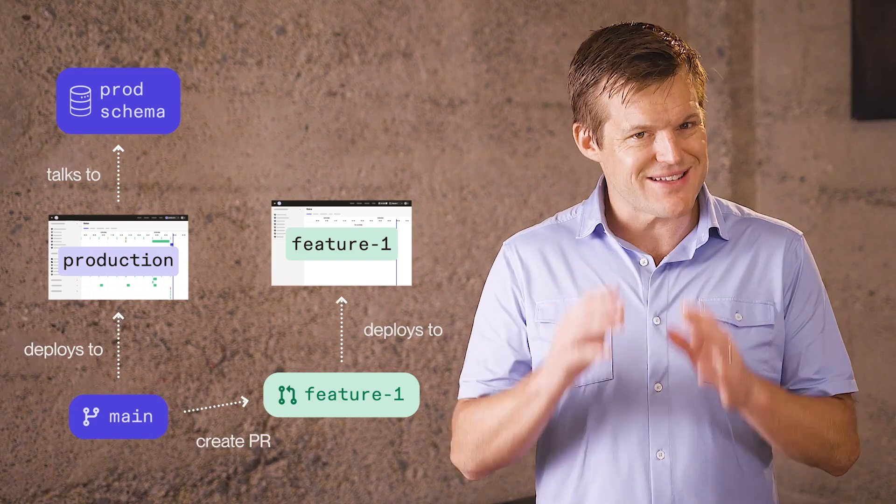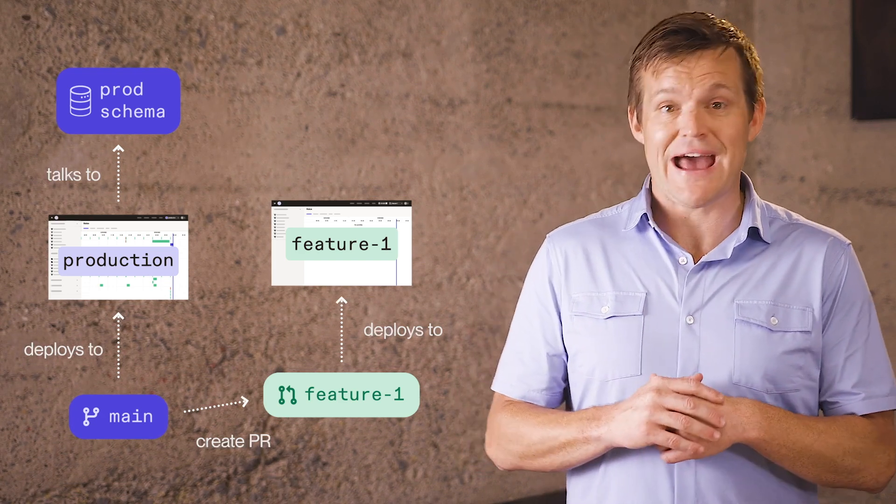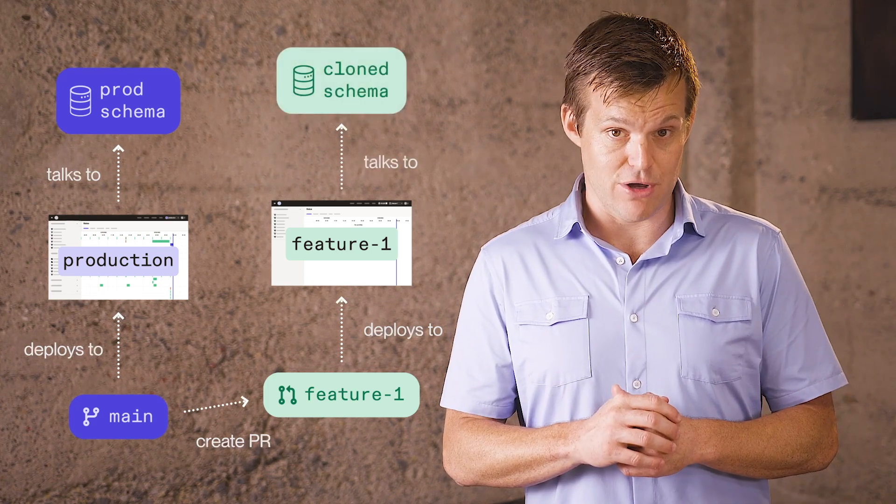The Dagster framework is designed with this in mind and allows you to parameterize your pipelines and assets to point to test data in the branch deployment.